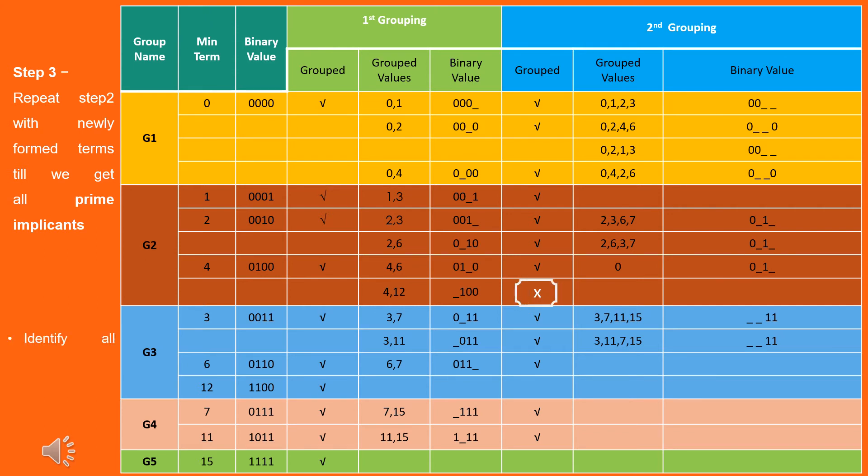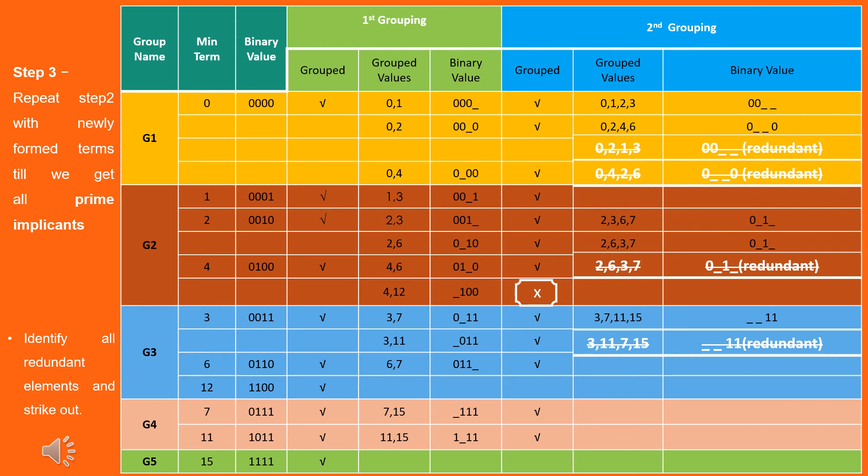Once all elements are grouped in such a way further grouping is not possible and the cross marks for non-covered elements is also marked. Look for redundant terms and strike them out.